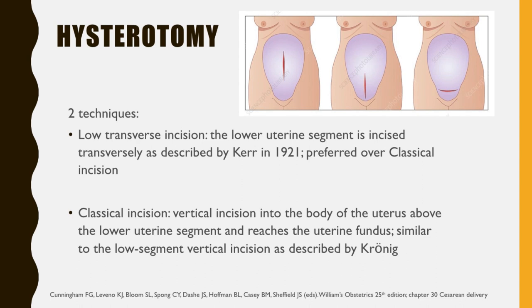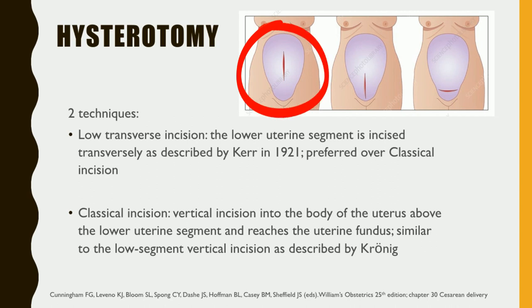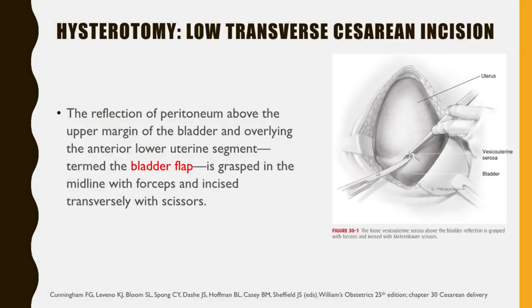Now we go to the uterine incision, or hysterotomy. There are two techniques. We have the low transverse incision, where the lower uterine segment is incised transversely as described by Kerr, and this is preferred over the classical incision. The classical incision is a vertical incision into the body of the uterus above the lower uterine segment reaching the uterine fundus, similar to the low-segment vertical incision described by Kroener.